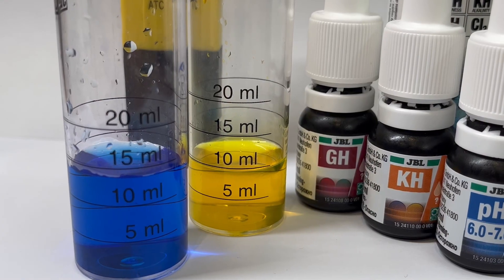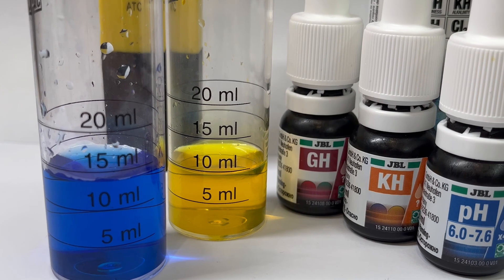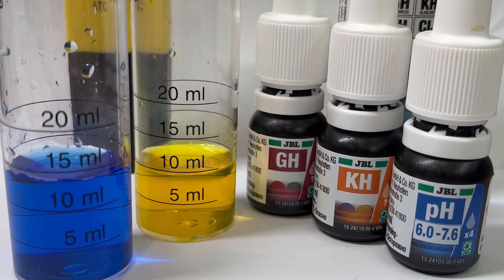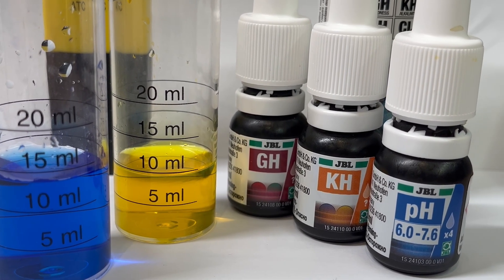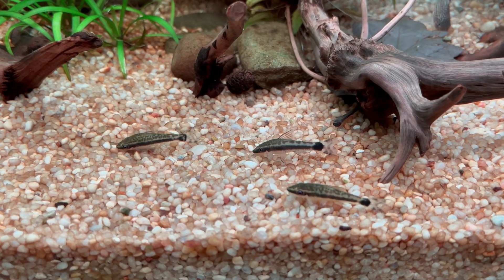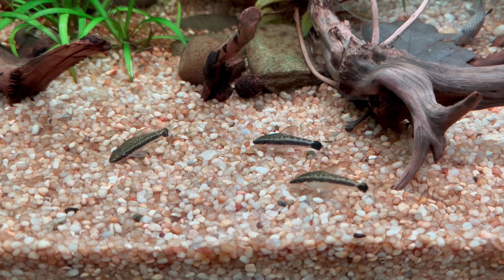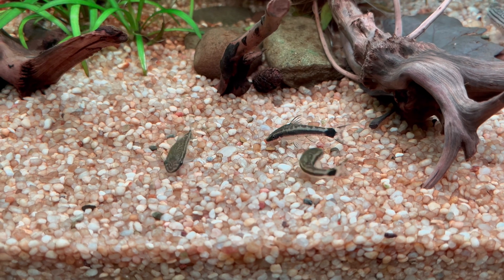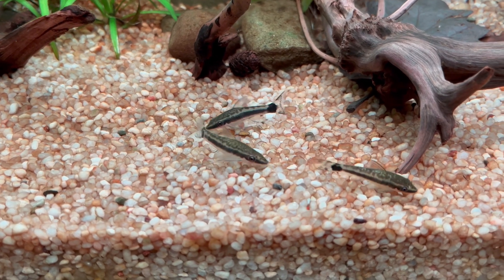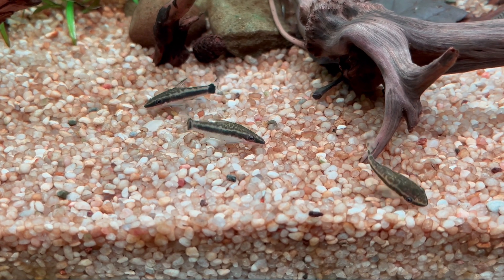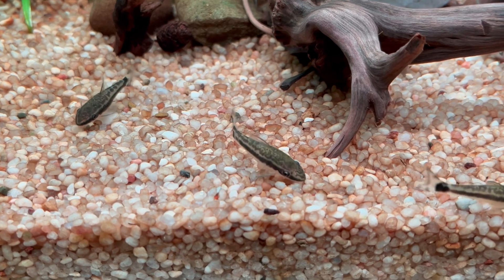So just to summarize, pH, KH and GH all measure specific kinds of ions. They are all important, but fish tolerate quite wide ranges of them. And if you keep your water within those ranges without sudden spikes, everything is going to be fine.